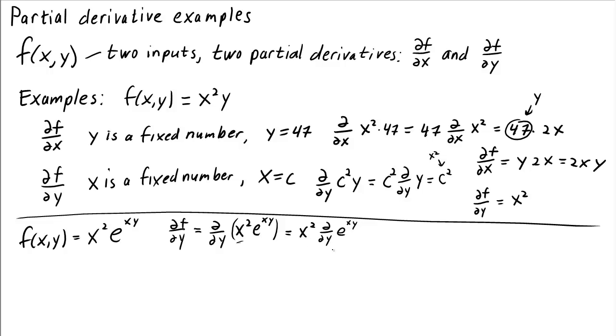And so we have x squared times the derivative of e to the y times some number. Now we need to use the chain rule. First we take a derivative of the exponential function, which is the function itself. So we get back e to the xy.